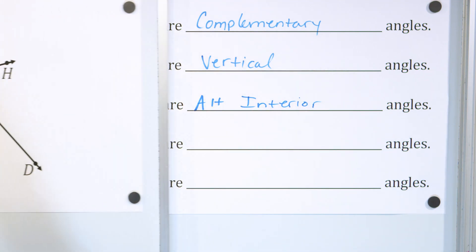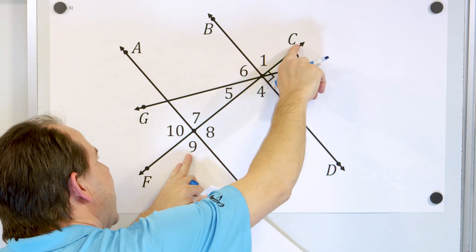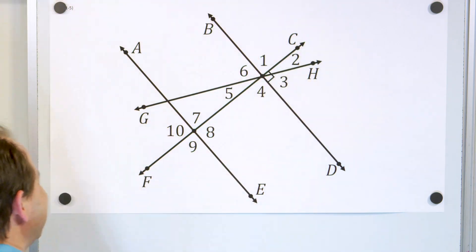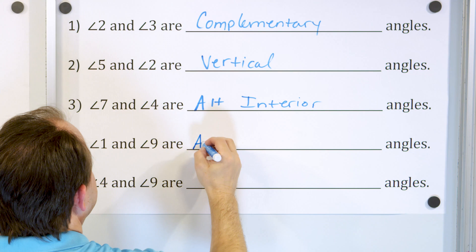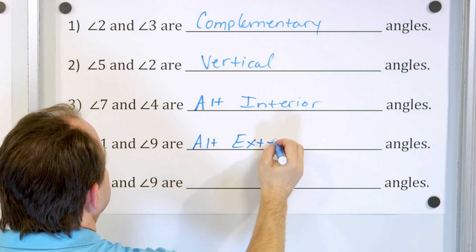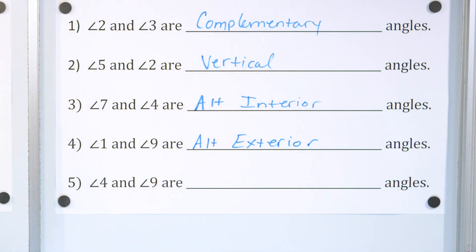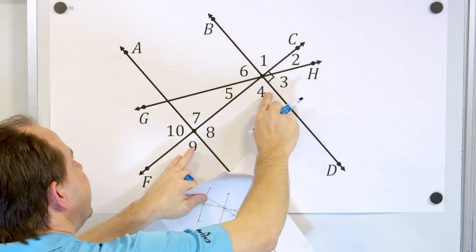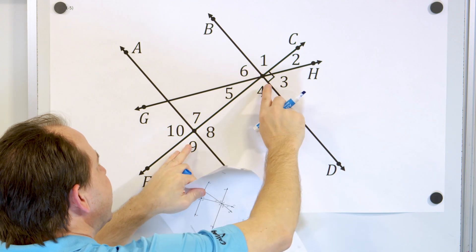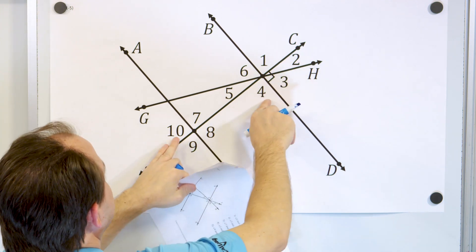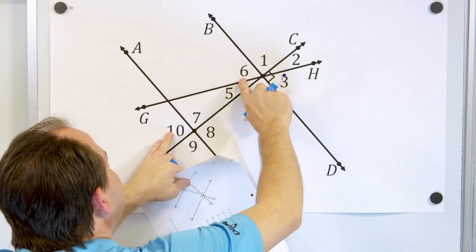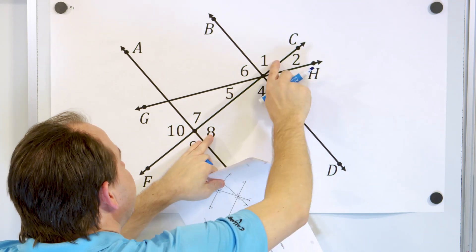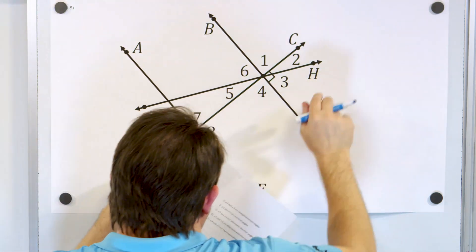Angle one and angle nine — we have the transversal and two parallel lines. Angle one and angle nine are alternate but on the exterior side, so these are alternate exterior angles. Finally, angle four and angle nine — they're on the same side, so they're not alternate, but they're in the same position relative to their intersection. So we call them corresponding angles.